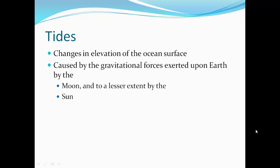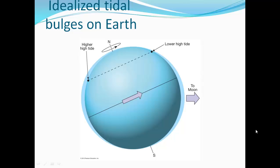Tides are changes in the elevation of the ocean surface, caused by gravitational forces exerted on Earth by the Moon and, to a lesser extent, the Sun. Though the Sun is much larger, the Moon has a greater influence on tides because it is much closer. The Moon's gravity pulls on the ocean surface, creating tidal bulges on the side facing the Moon and on the far side, while the water narrows at the perpendicular extremes. This produces a high tide on one side and a lower high tide on the other.